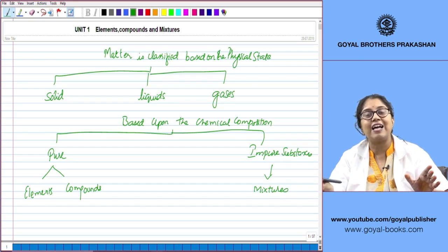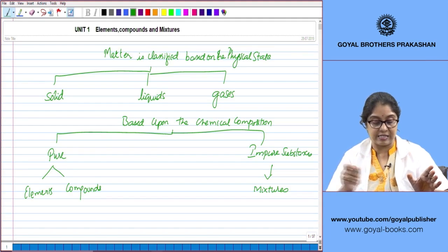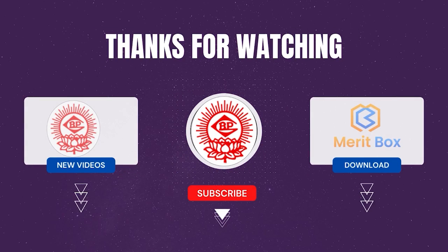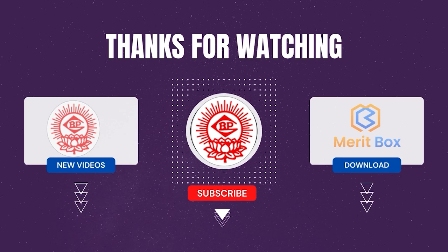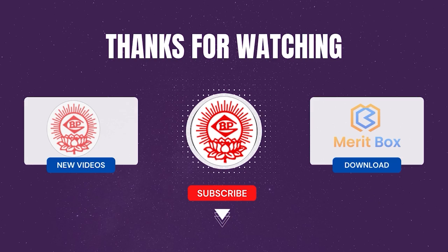So what is that which determines the chemical composition of matter? It depends upon the type of particles. The chemical composition of matter depends upon the nature of particles.